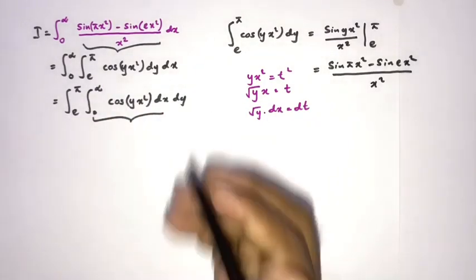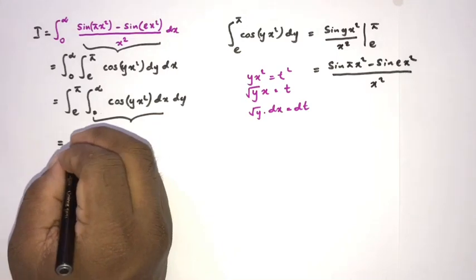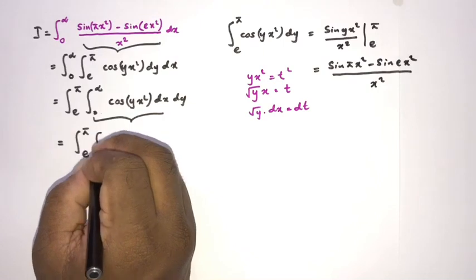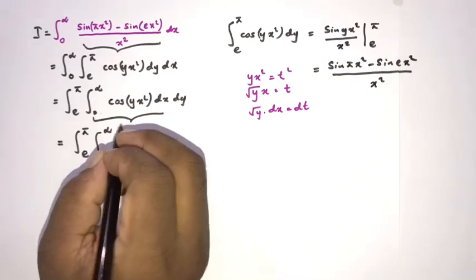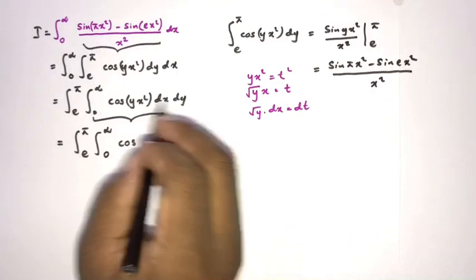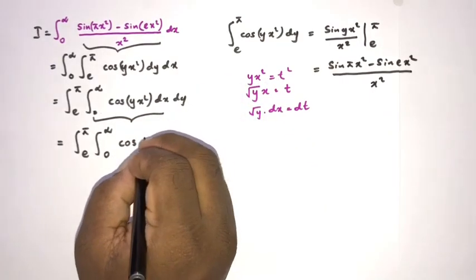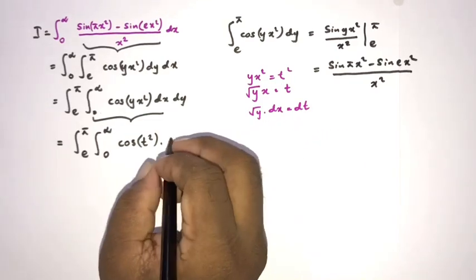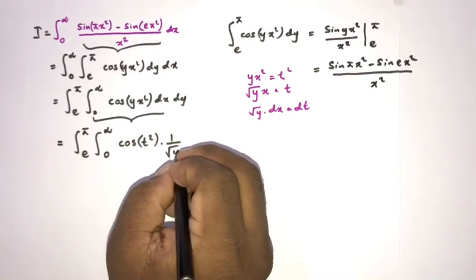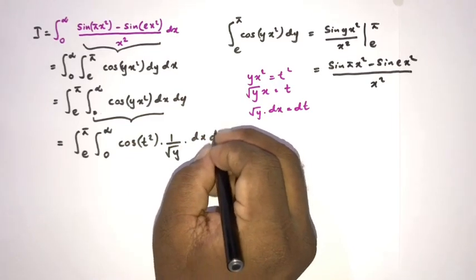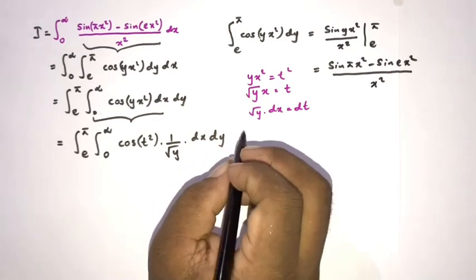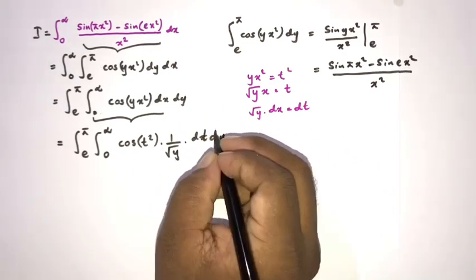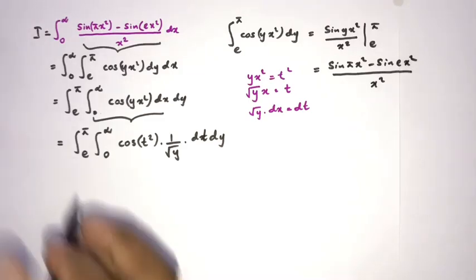We can now write the integral from e to pi, integral from 0 to infinity of cosine of t squared. For dx, we know that dx equals dt over the square root of y. So we can write the integral from e to pi of one over the square root of y dy, times the integral from zero to infinity of cosine of t squared dt.